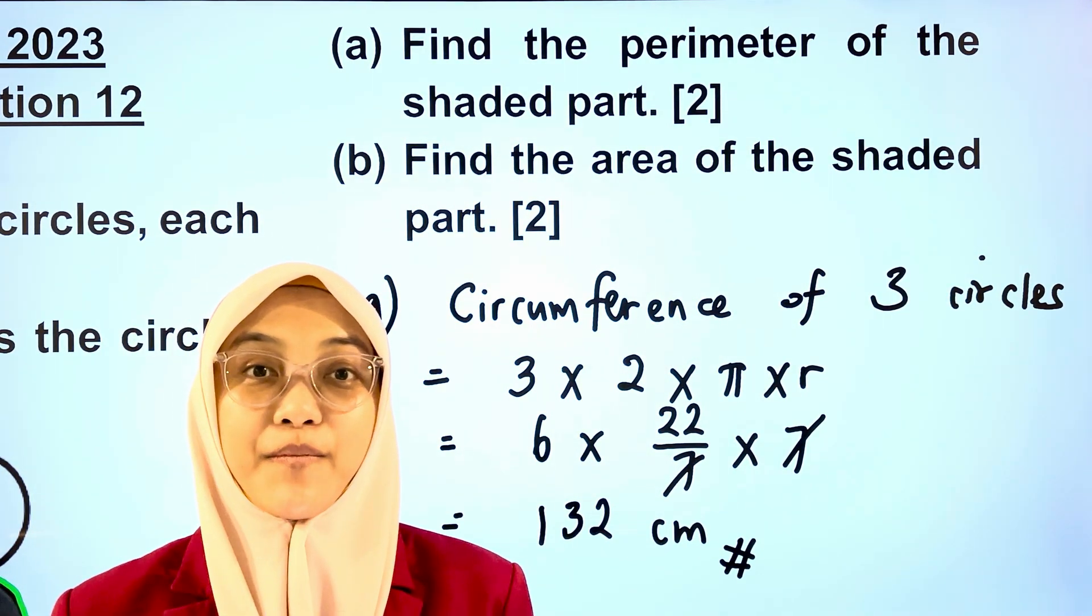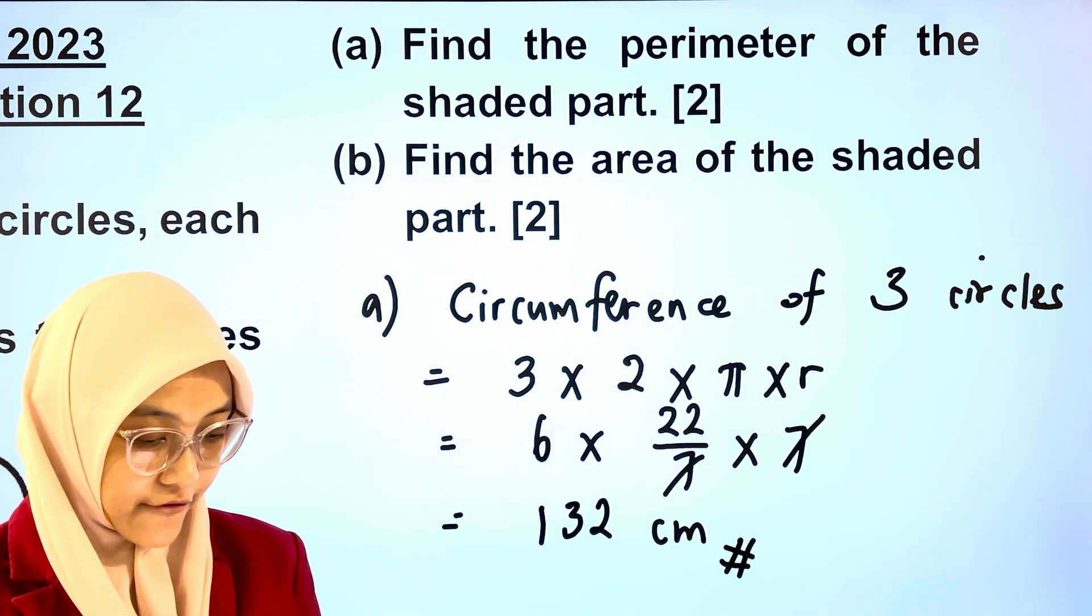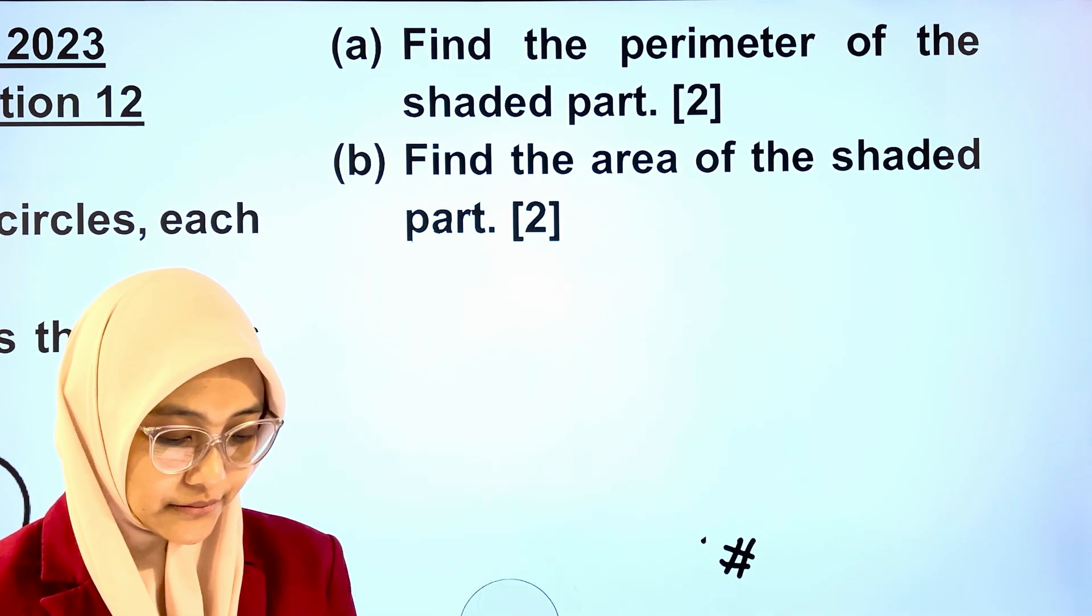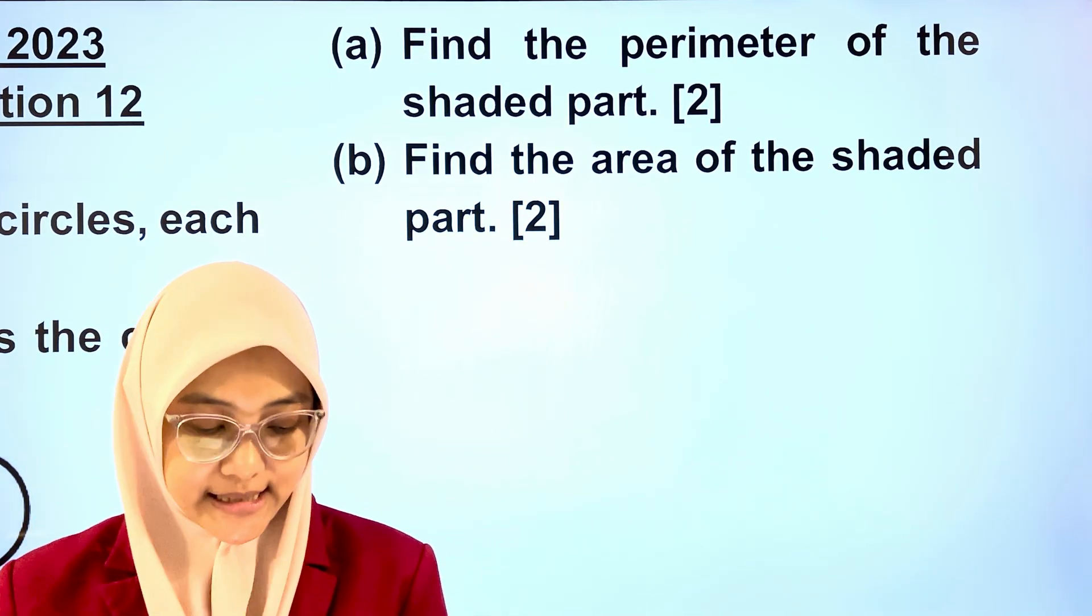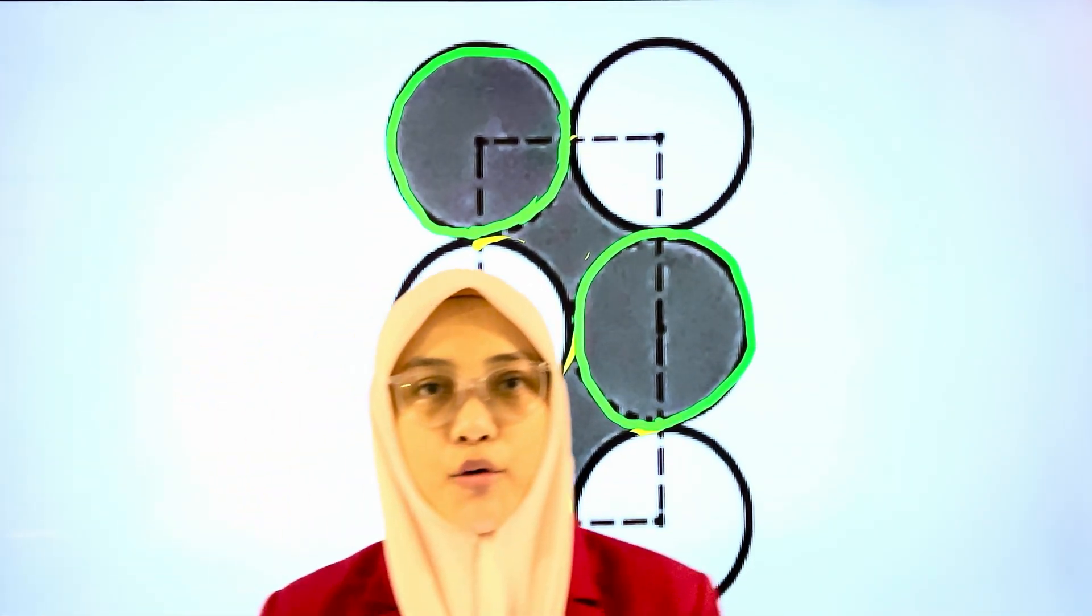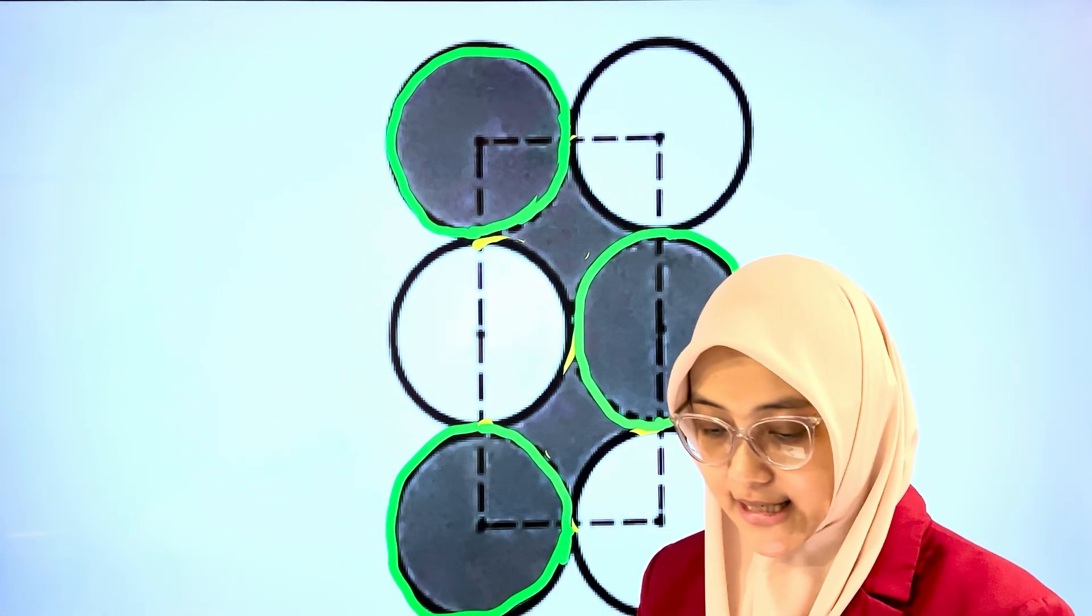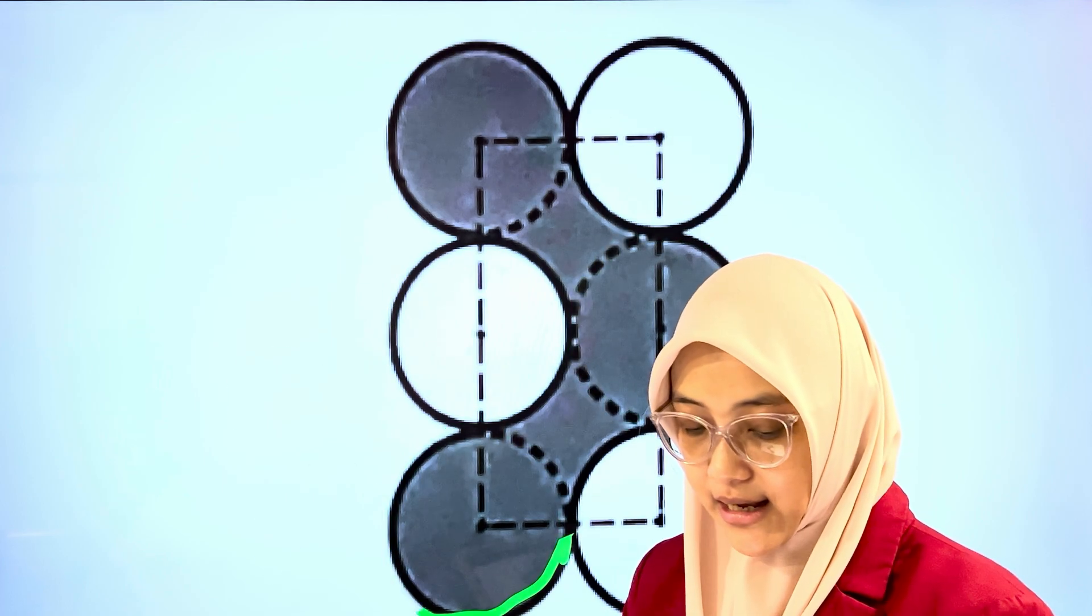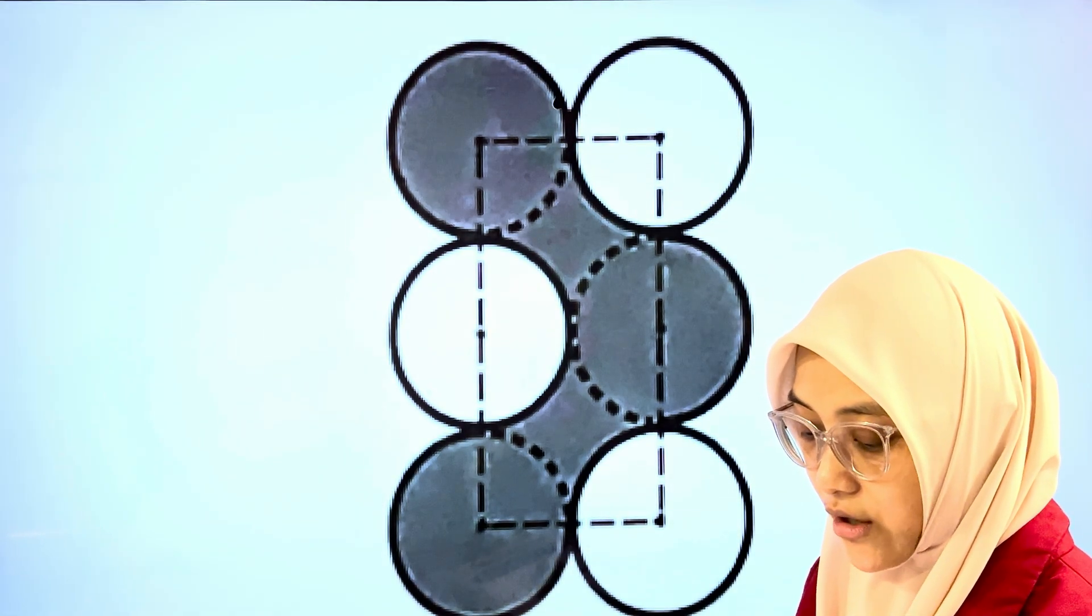Let's do the same for part B. I'm going to erase this away so I have more space to write. Part B. Find the area of the shaded part. Recall how do we solve a composite figure question? We need to find basic shapes. Let's erase away all these. So where are the shaded areas?